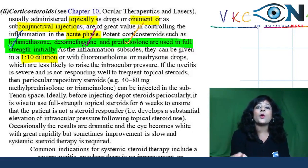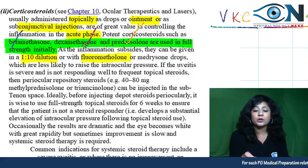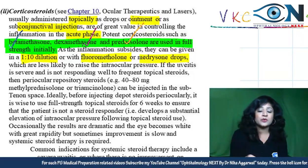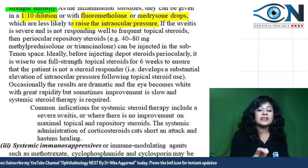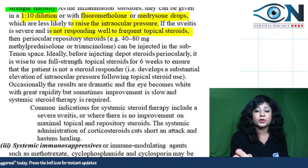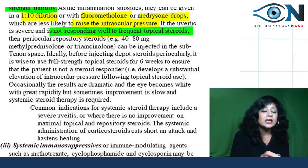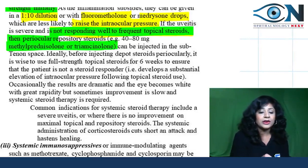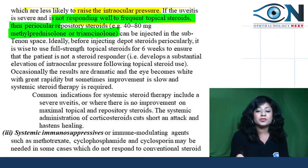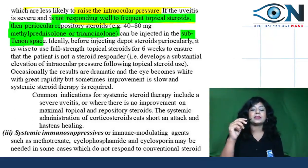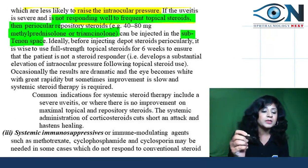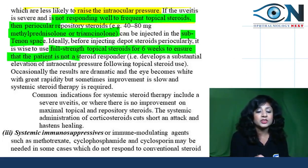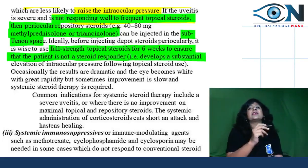Steroids can also be given in diluted form, or with fluorometholone or medrysone drops which have weaker potency and are less likely to raise intraocular pressure. If uveitis is severe and not responding to topical steroids, periocular steroids — methylprednisolone or triamcinolone — can be injected into the subtenon space.